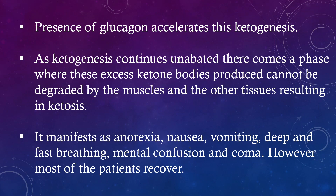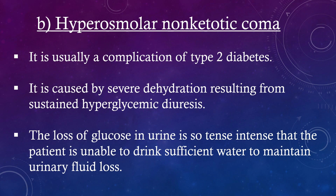Ketosis manifests as anorexia, nausea, vomiting, deep and fast breathing, mental confusion, and coma. However, most patients recover. Hyperosmolar non-ketotic coma is usually a complication of type 2 diabetes. It is caused by severe dehydration resulting from sustained hyperglycemic diuresis. The loss of glucose in urine is so intense that the patient is unable to drink sufficient water to maintain urinary fluid loss.